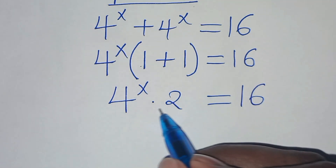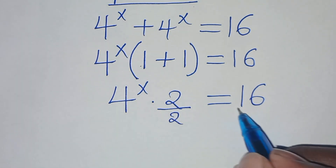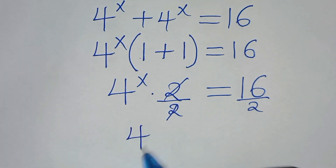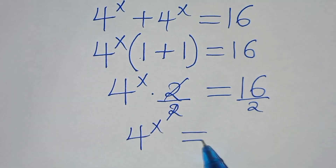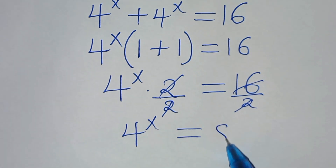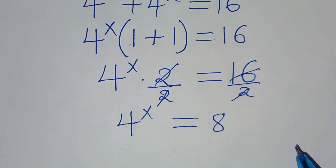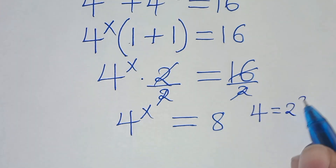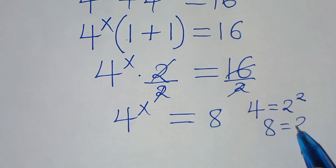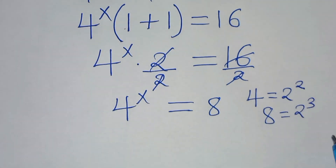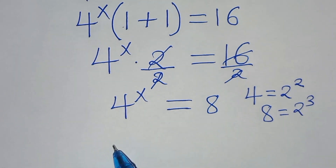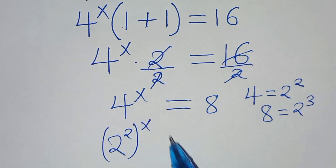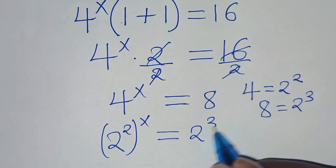Dividing both sides by 2, we have 4 to the power of x equals 16 divided by 2, which is 8. The next step is to express 4 as 2 to the power of 2, and 8 as 2 to the power of 3. Substituting, we have 2 to the power of 2 raised to the power of x, this is equal to 2 to the power of 3.